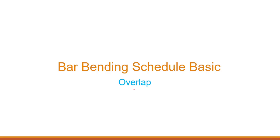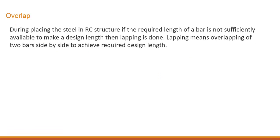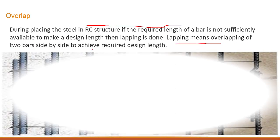In this tutorial we are going to learn about overlap. What is overlap? During placing steel in an RC structure, if the required length of a bar is not sufficiently available to make a design length, then lapping is done. Lapping means overlapping of two bars side by side to achieve the required design length.